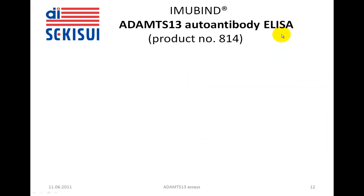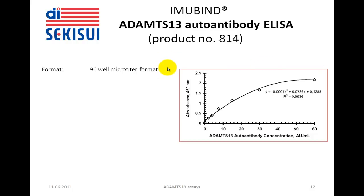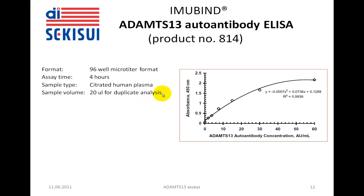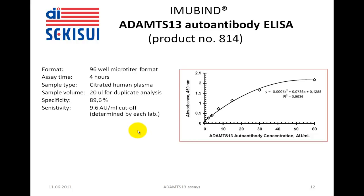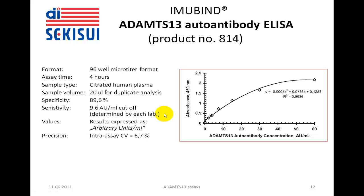The next product is an ADAMS-13 autoantibody ELISA, product number 814. Again, it is a 96-well microtiter plate format with an assay time of 4 hours. Citrated human plasma may be used, and 20 microliters for duplicate analysis is needed. The specificity is 89.6%, and the sensitivity is 9.5 arbitrary units per ml at the cutoff level. It is important that at the moment this requires determination of sensitivity by each laboratory which uses the test. Results are expressed as arbitrary units per ml. The intra-assay coefficient of variation has been determined at 6.7%. This test is CE marked.